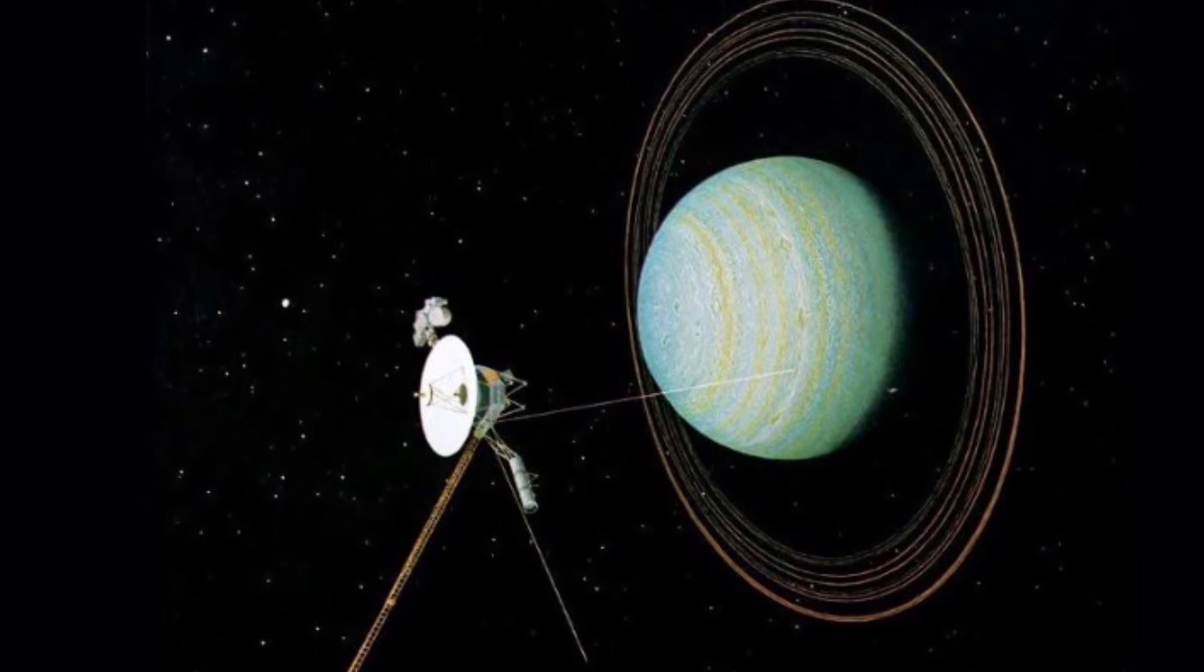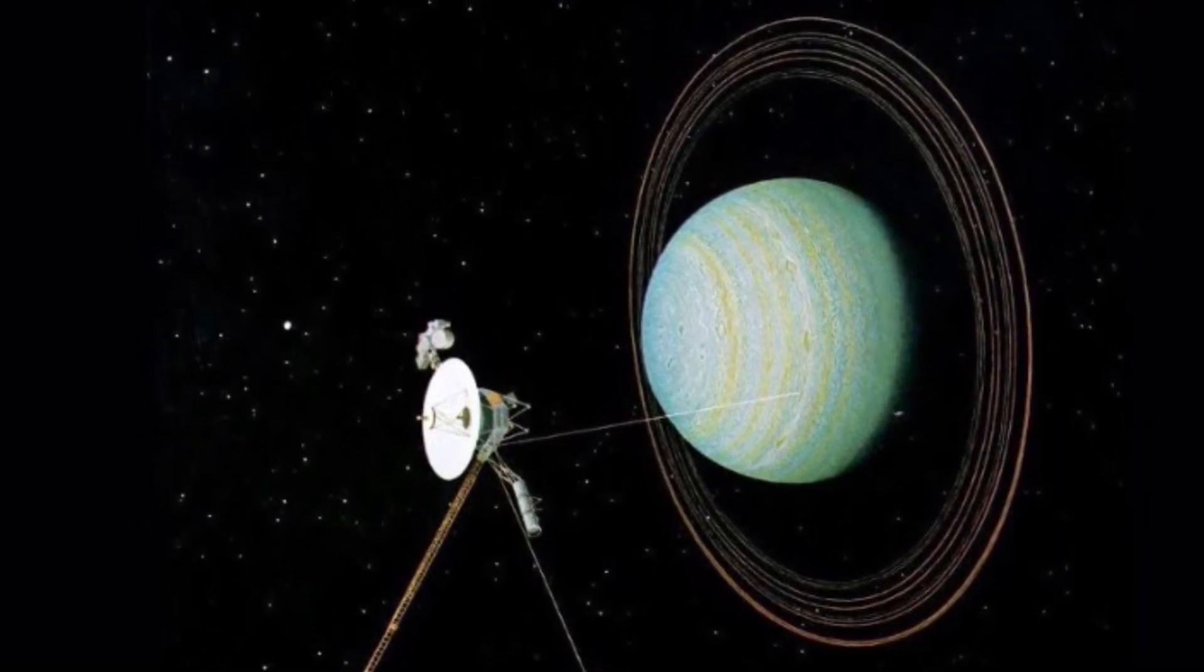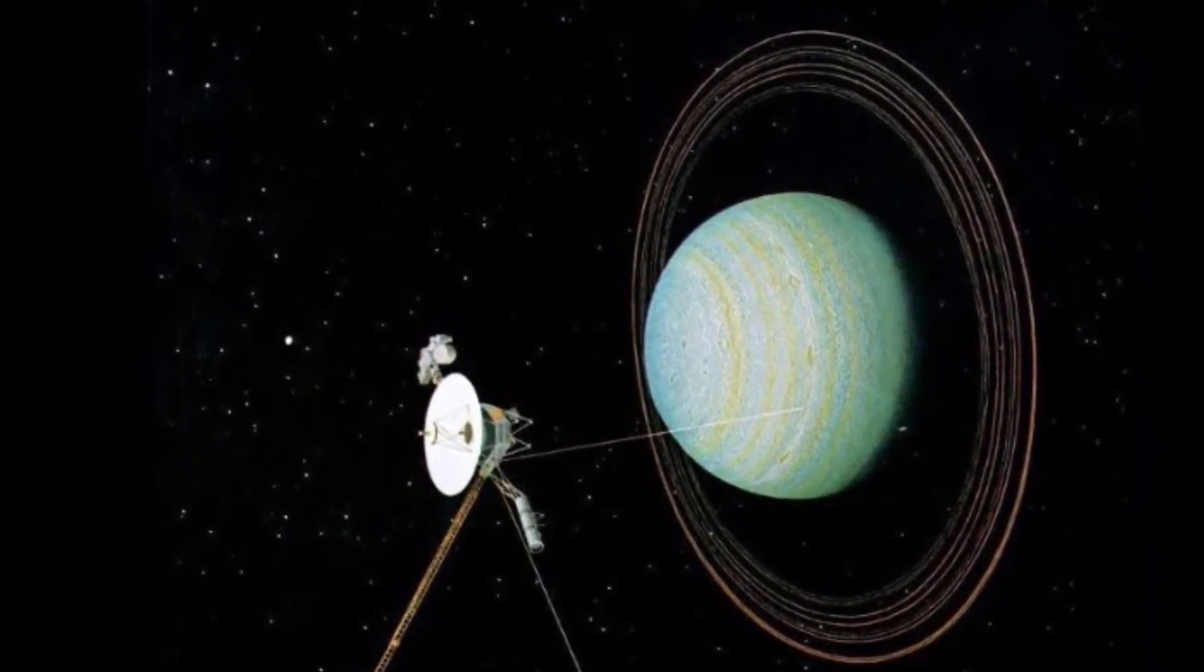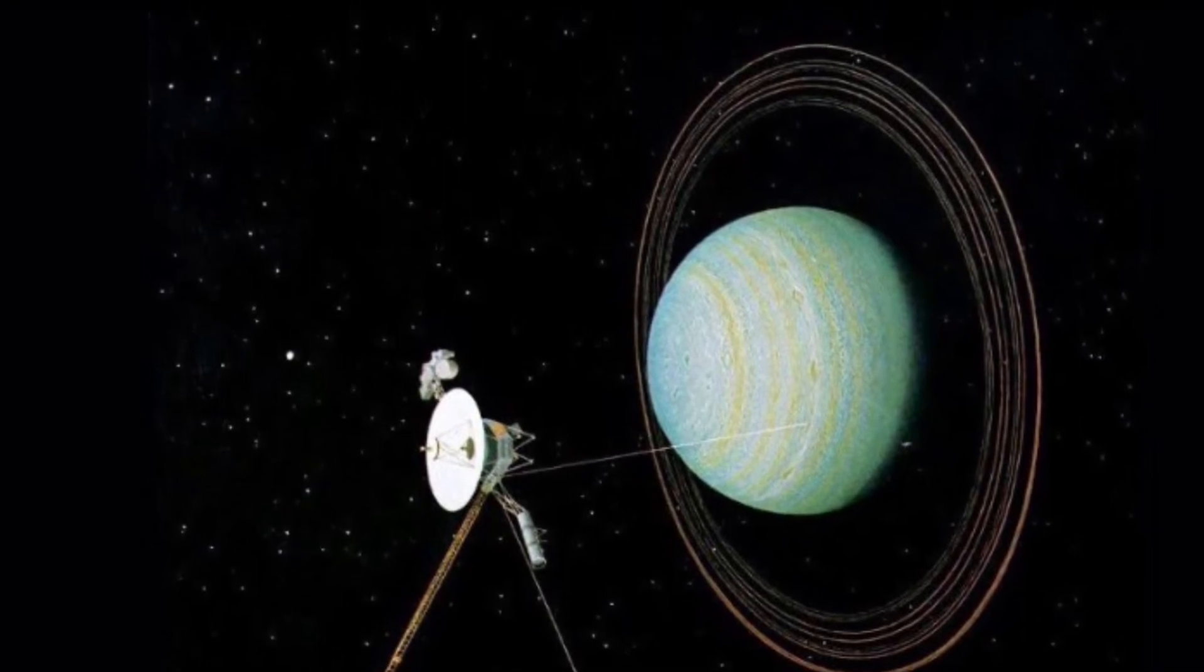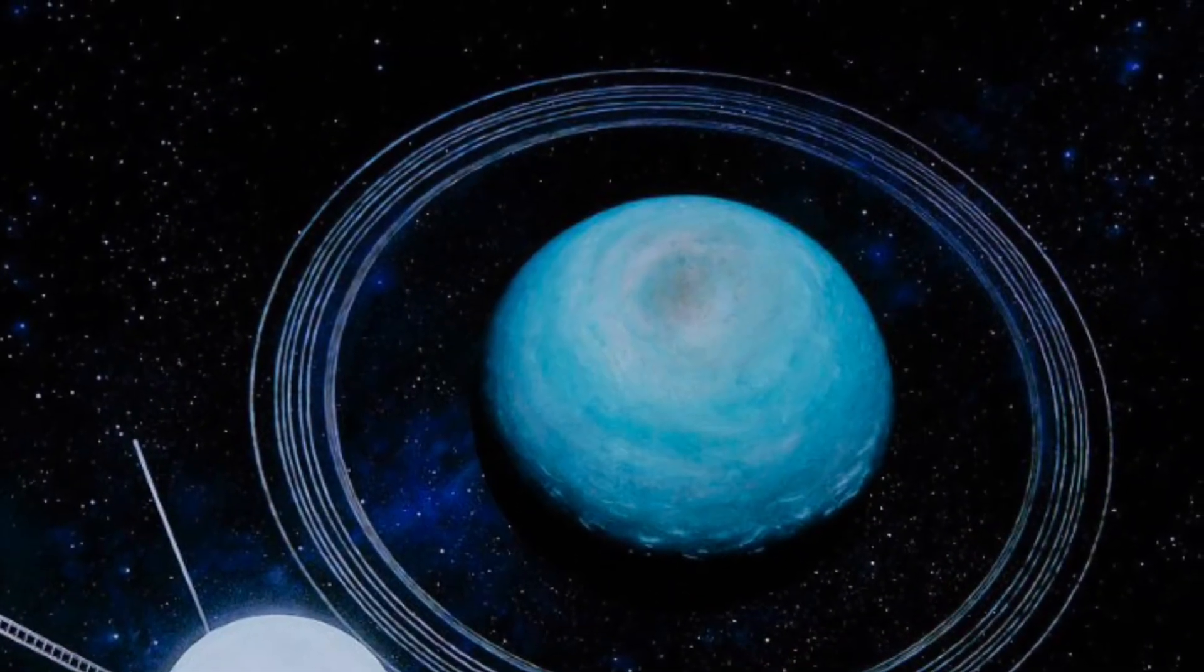In the year 1986, the probe Voyager 2 flies past Uranus, making it the first and only expedition sent to the planet.